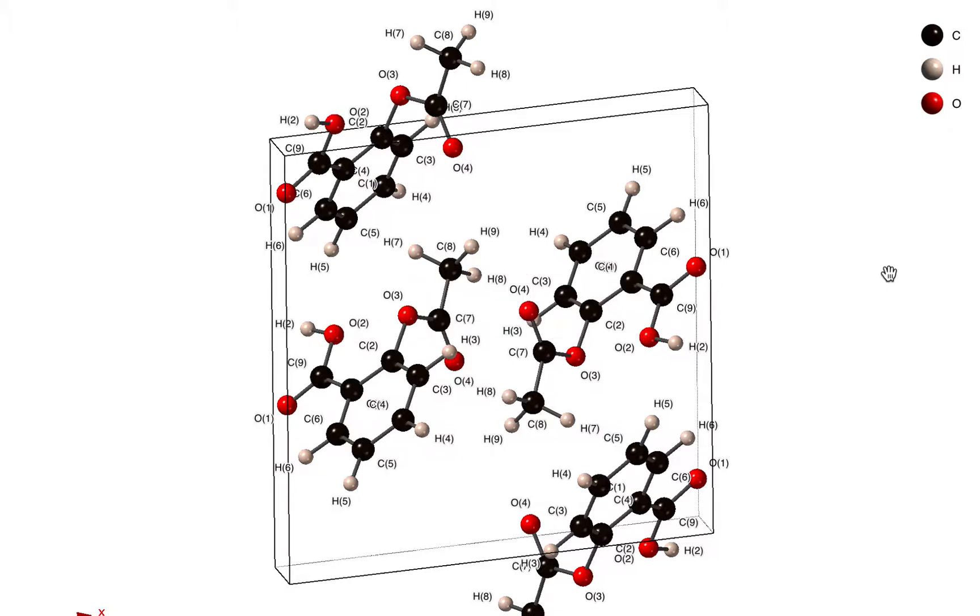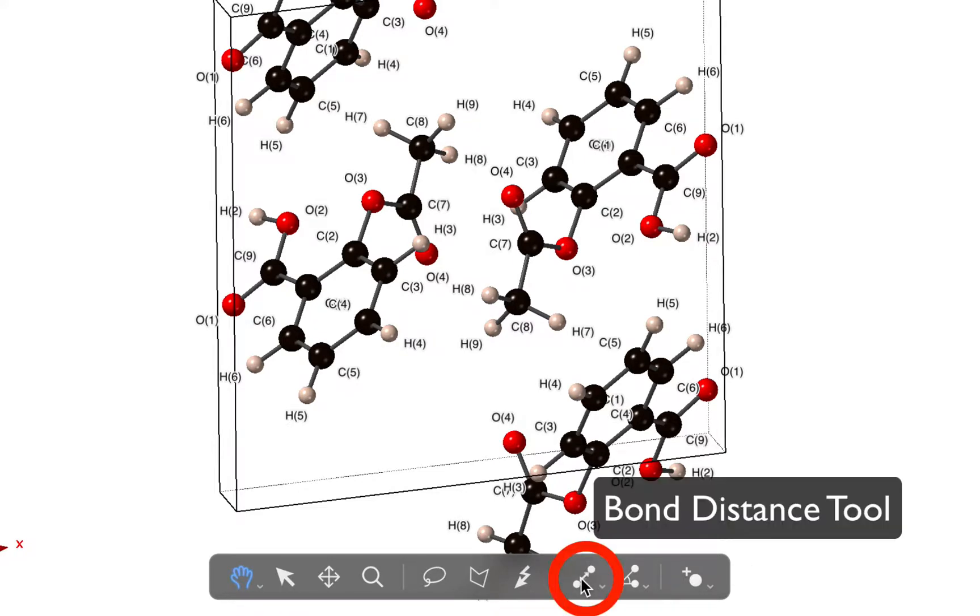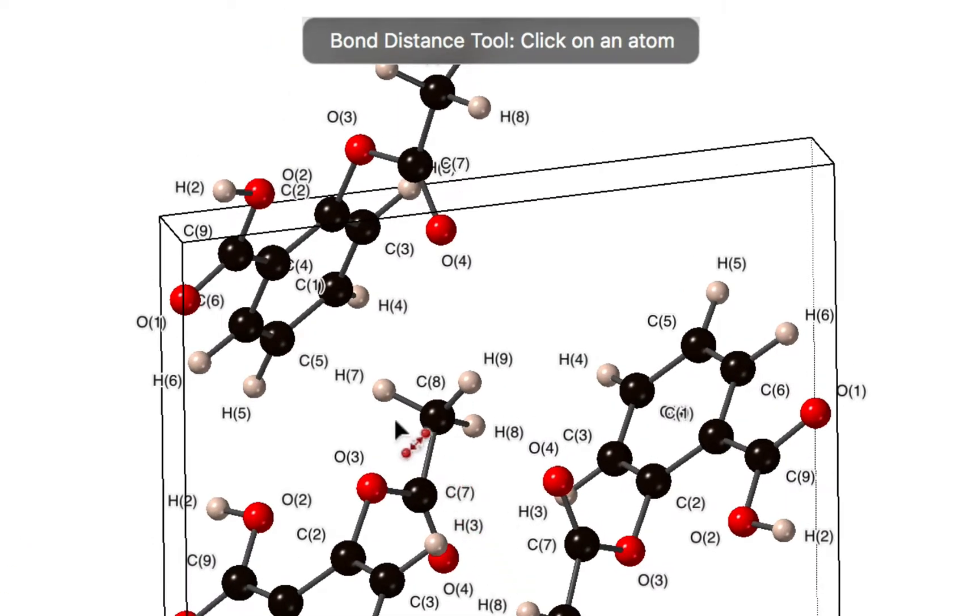Now the next thing you might want to do is measure some distances between atoms. An easy way of doing that is to move down to this tool strip at the bottom of the screen and we'll choose the bond distance tool.